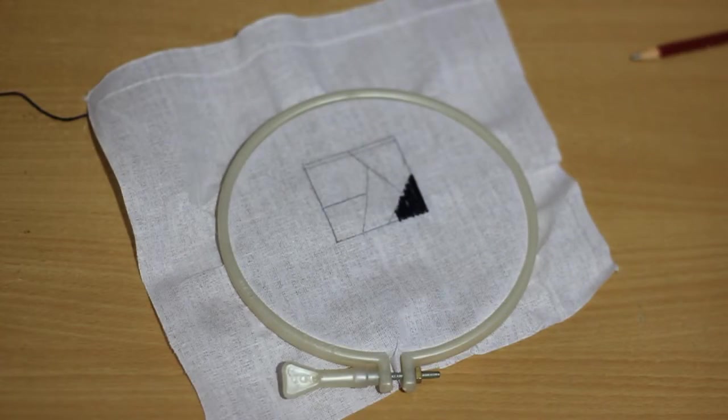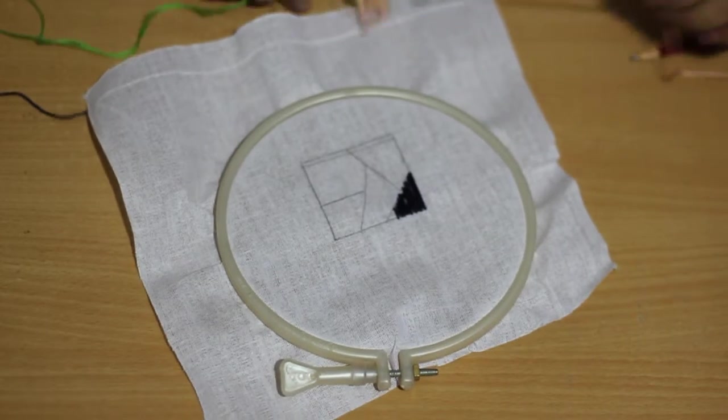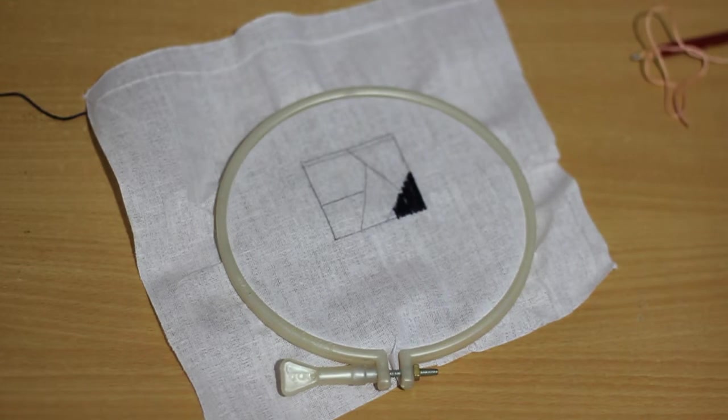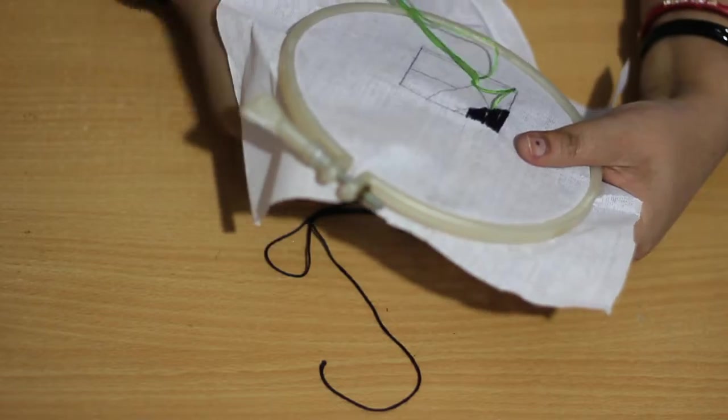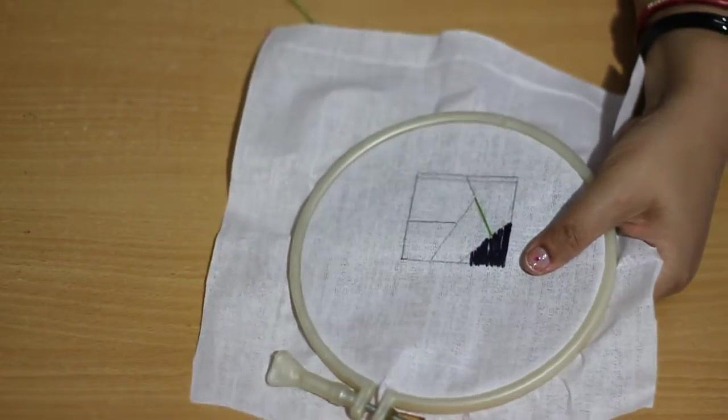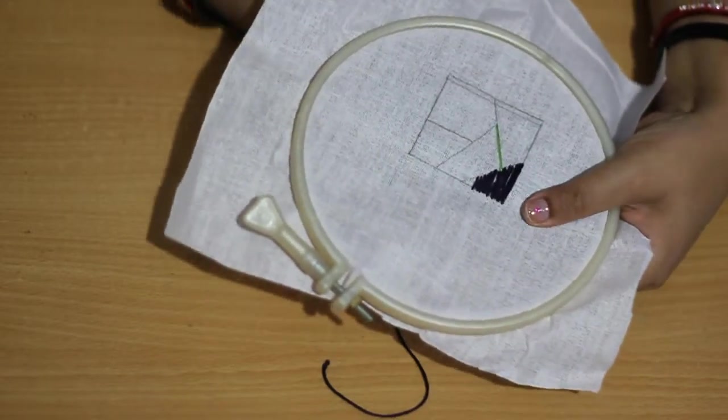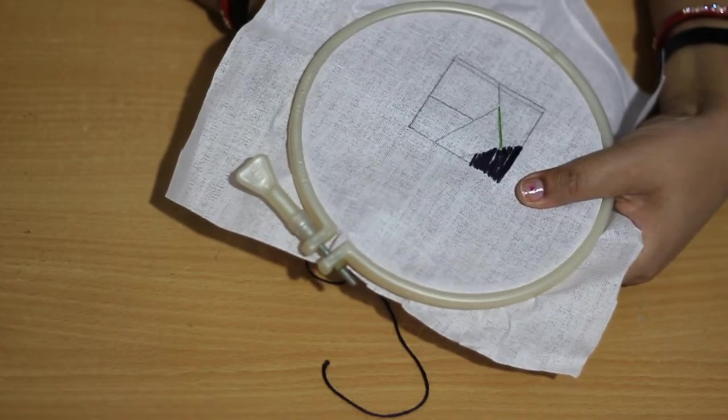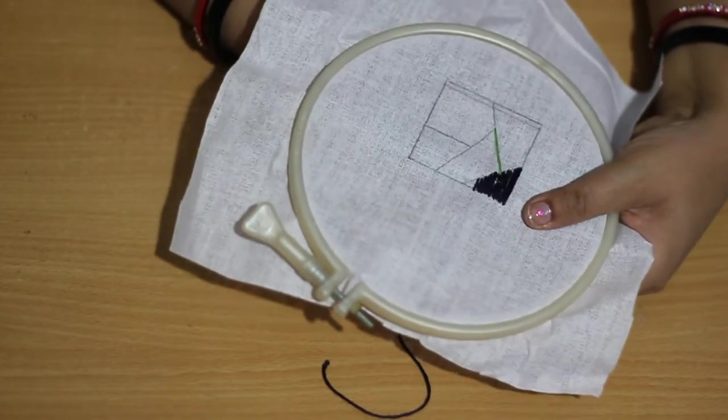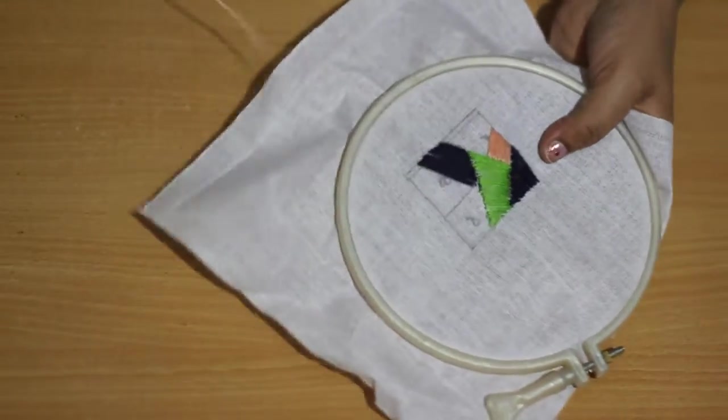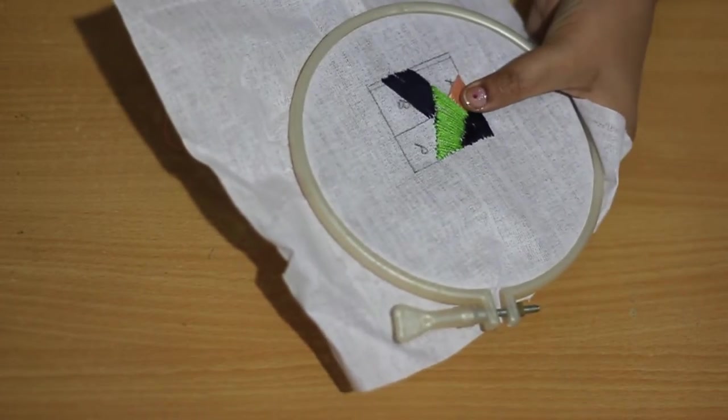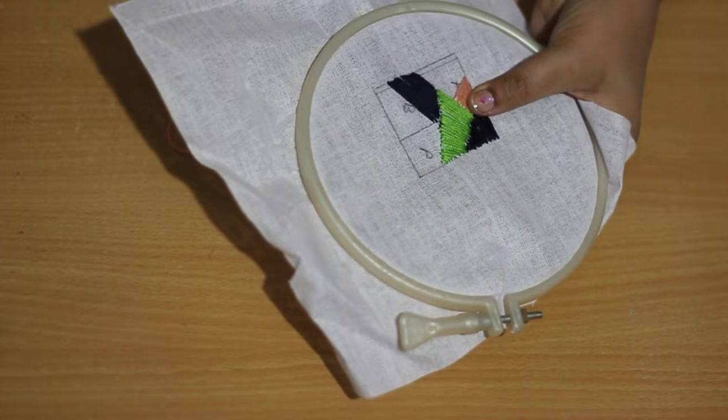First one I have filled. Then using a light green thread, I will fill another shape. This way we can fill all the shapes. I am using peach color here to fill one more shape.